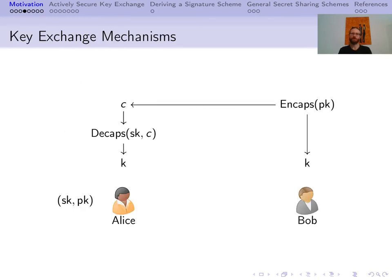Now let us have a look at the definition of a key exchange mechanism. We have two parties, Alice and Bob. Alice has a secret and a public key; she publishes the public key and keeps the secret key to herself. Bob can take the public key and run the encapsulation protocol on it, giving him a key K and a ciphertext C that he sends to Alice. Alice in turn runs the decapsulation on the ciphertext with her secret key SK and also gets a key K. The keys they both receive should coincide. We will take a closer look at the decapsulation protocol specifically in this work.